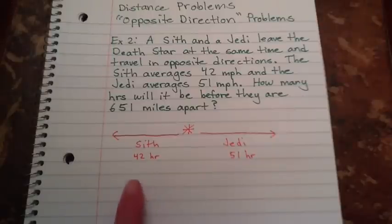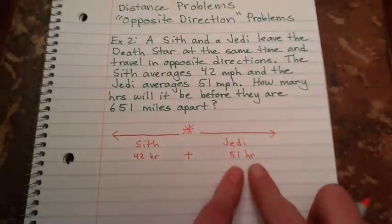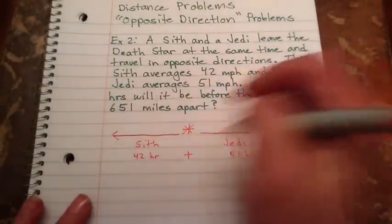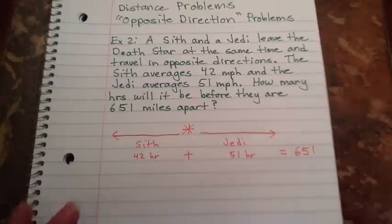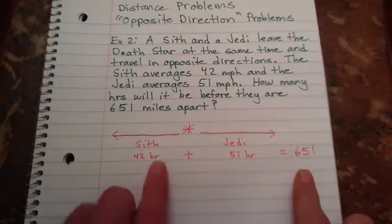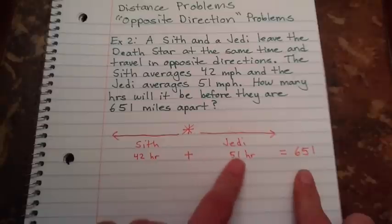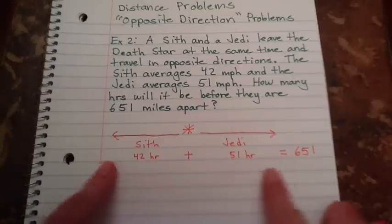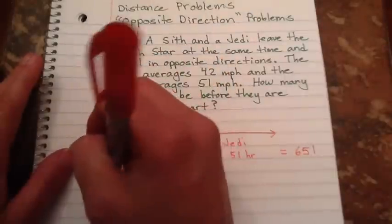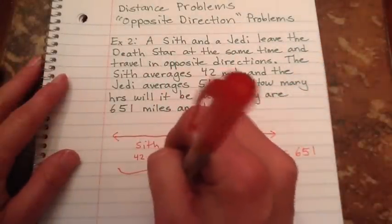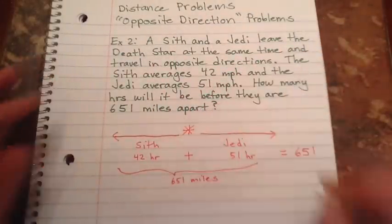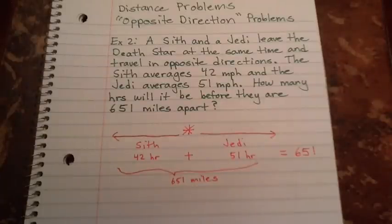Here's what you have to think about. 42 miles an hour plus the Jedi's 51 miles an hour is going to equal 651 miles total. This total per hour plus this total per hour equals the miles that they're going to be apart. Because this whole thing equals 651 miles. You don't even have two equations if you take the shortcut. You have one equation and you just solve.